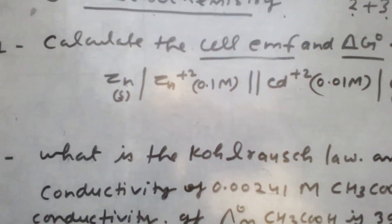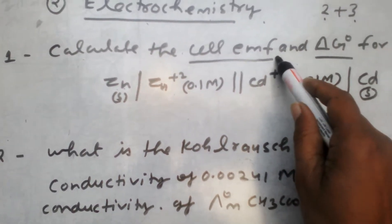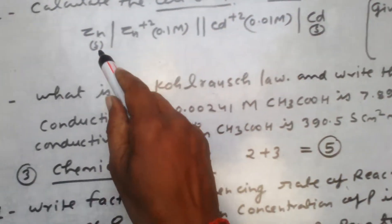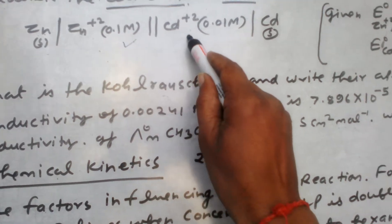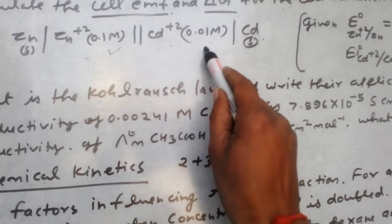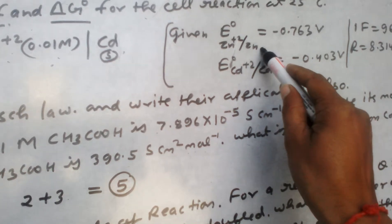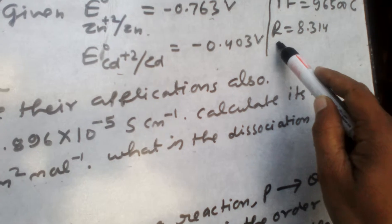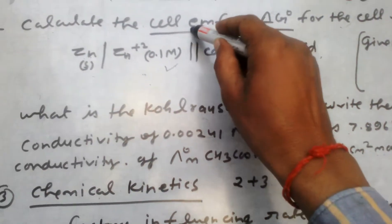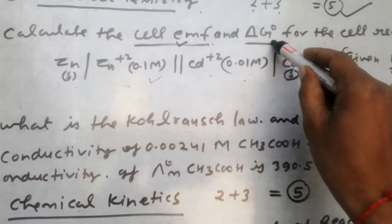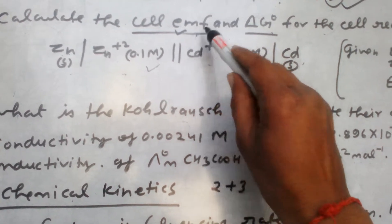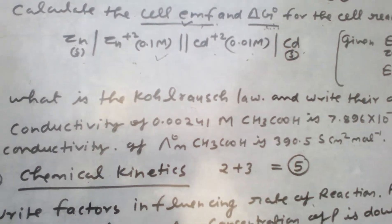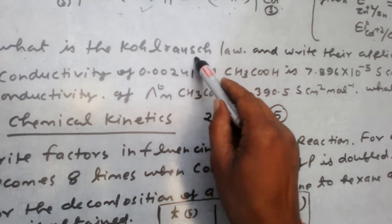What is the first question? Calculate the EMF of the cell and delta G, the free energy for the cell reaction. The cell has been given with zinc and copper electrodes. Given standard reduction potentials, you calculate EMF using the Nernst equation and delta G.